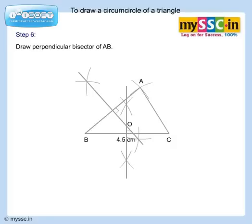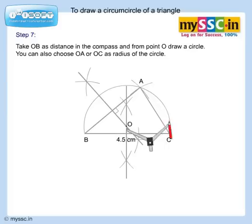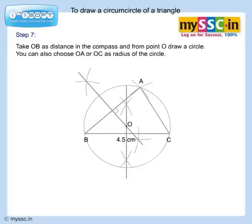The point of intersection of the two perpendiculars is marked as O. Take OB as the distance in the compass and from point O draw a circle. You can also choose OA or OC as the radius of the circle. The circumcircle of the triangle is drawn. Thank you very much.